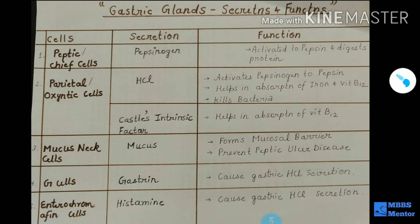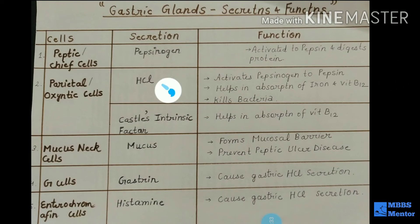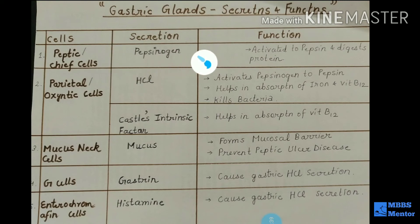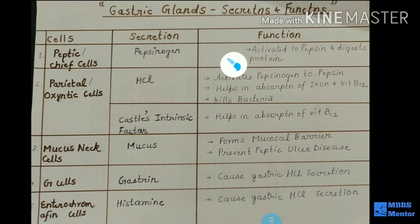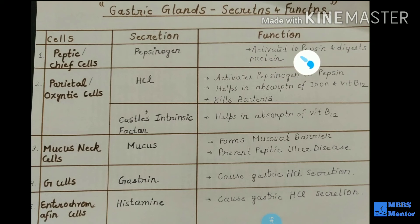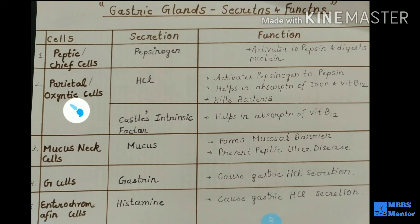Let us revise once again. There are mainly three gastric cells. Number one is the peptic or chief cells, which secrete the pro-enzyme pepsinogen — be very clear, pepsin is not directly secreted. The function of pepsinogen is to be activated to pepsin and digest proteins, converting proteins into proteases and peptones.